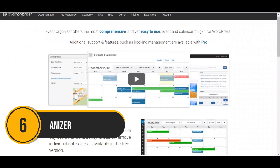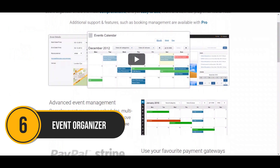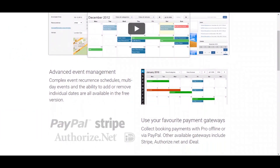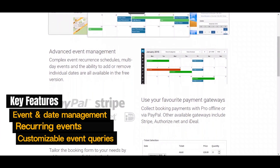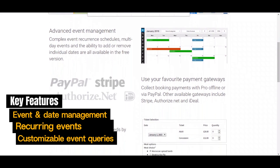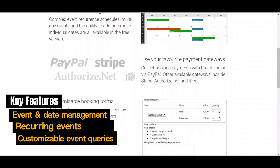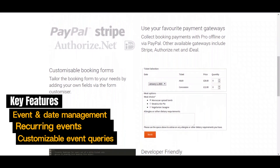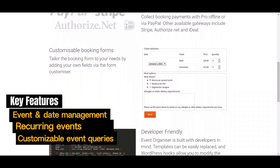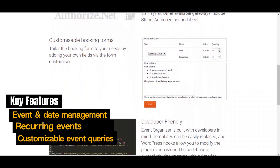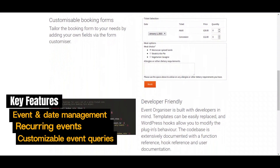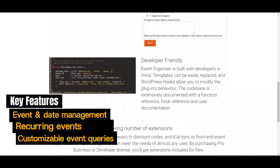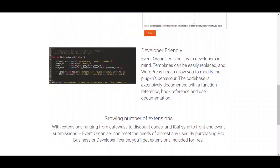Now, on to the Event Organizer. It's like having your own personal assistant for event planning right within WordPress. Whether you're organizing a casual meetup or a grand conference, this plugin has your back. Event and date management, recurring event support, managing venues, bookings, and customizable event queries — it's all covered. Plus, you get handy shortcodes and widgets to display your events anywhere on your site effortlessly.